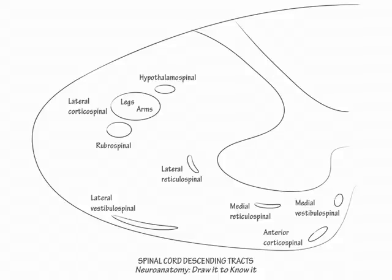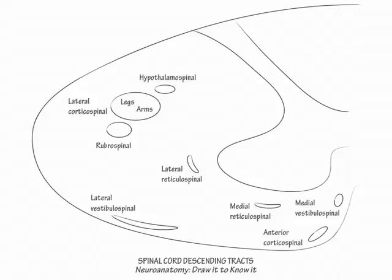The action of these tracts will help you remember their organization. The rubrospinal tract provides elbow flexion, and the reticulo- and vestibulospinal tracts provide extension of the neck and upper and lower limbs. Normally, these tracts are inhibited by the cerebral cortex. When cortical inhibition is disrupted, activation of the rubrospinal and reticulo- and vestibulospinal tracts results in elbow flexion and lower extremity extension, so-called decorticate posturing. A lesion below the midbrain cuts off cortical and rubrospinal inputs and results in extension of the neck and all four limbs, so-called decerebrate posturing.